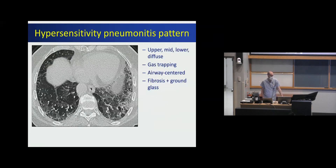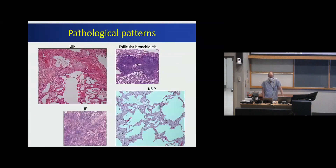If you see NSIP, it's really suspicious for connective tissue disease — you can also see it with drug or environmental exposures. The last main fibrotic ILD is hypersensitivity pneumonitis, characterized by multiple distributions — upper, mid, lower, or diffuse. You can see fibrosis, features of inflammation, and areas of airways involvement like gas trapping or mosaic attenuation — relative lucency scattered throughout. When you see these areas of lucency with ground glass and normal lung density together, we call that a three-density sign, which is pretty specific for HP. Pathology patterns include UIP with fibroblastic foci, NSIP with lace-like abnormalities, LIP with lymphoid follicles, and follicular bronchiolitis most suspicious of connective tissue disease.